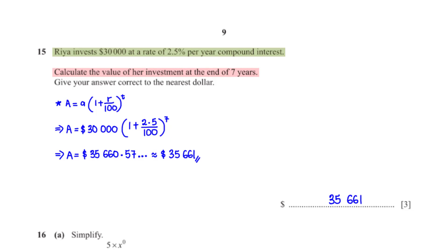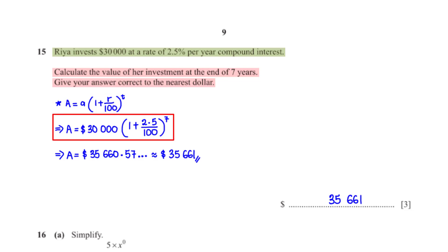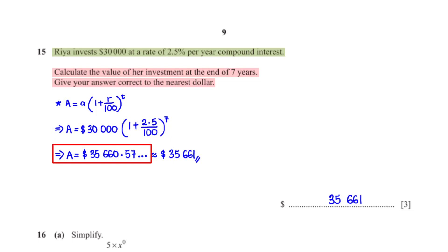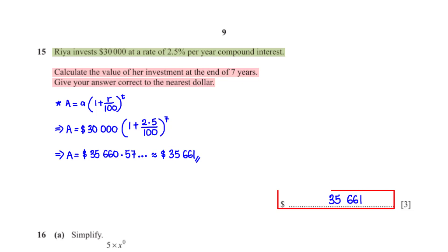Ria invests $30,000 at a rate of 2.5% per year compound interest. Calculate the value of the investment at the end of seven years, correct to the nearest dollar. Applying the compound interest formula A = P(1 + r/100)^t with P = 30,000, r = 2.5, and t = 7, and rounding to the nearest dollar gives $35,661.